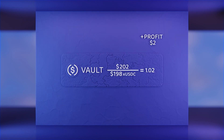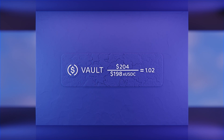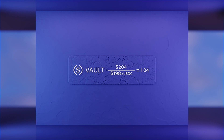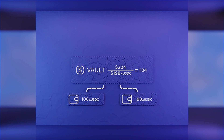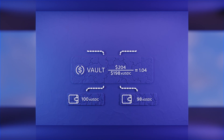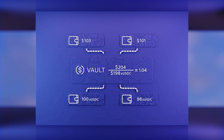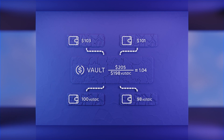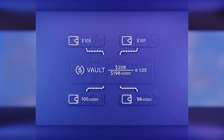Now more money is deposited in the vault and the profits are bigger. As the auto compound process repeats itself, the price of shares increases and investors accumulate earnings. Thus, the vault controls the distribution of profits, constantly increasing your deposit's worth.